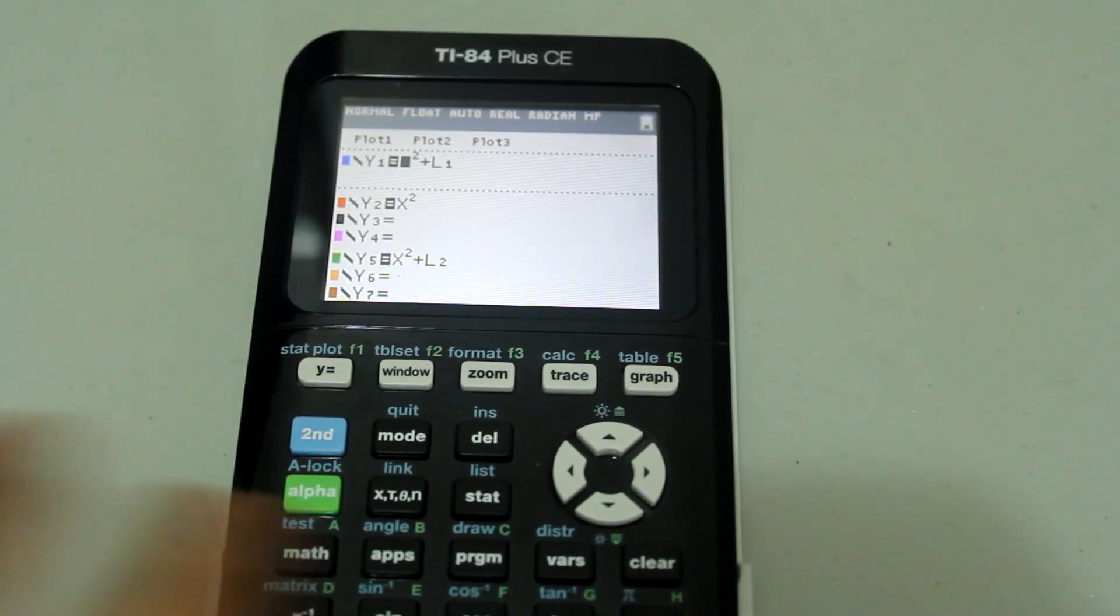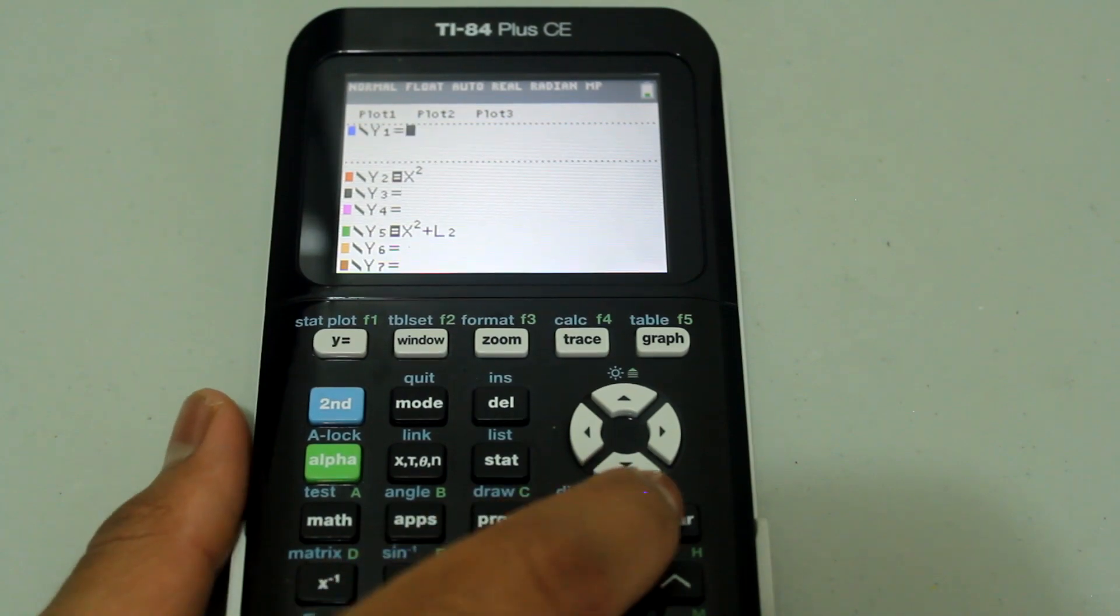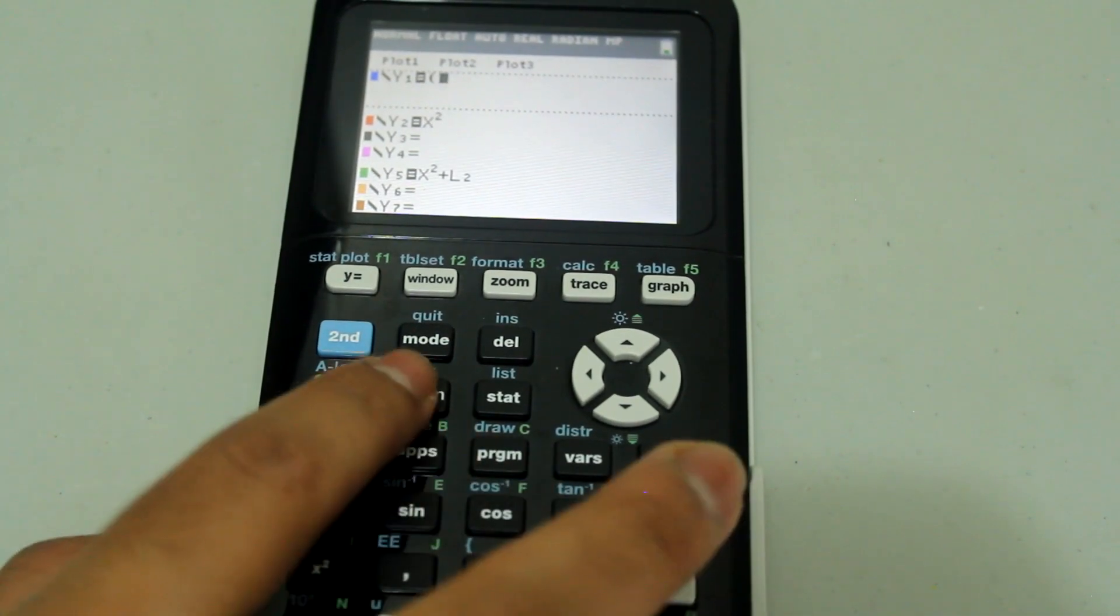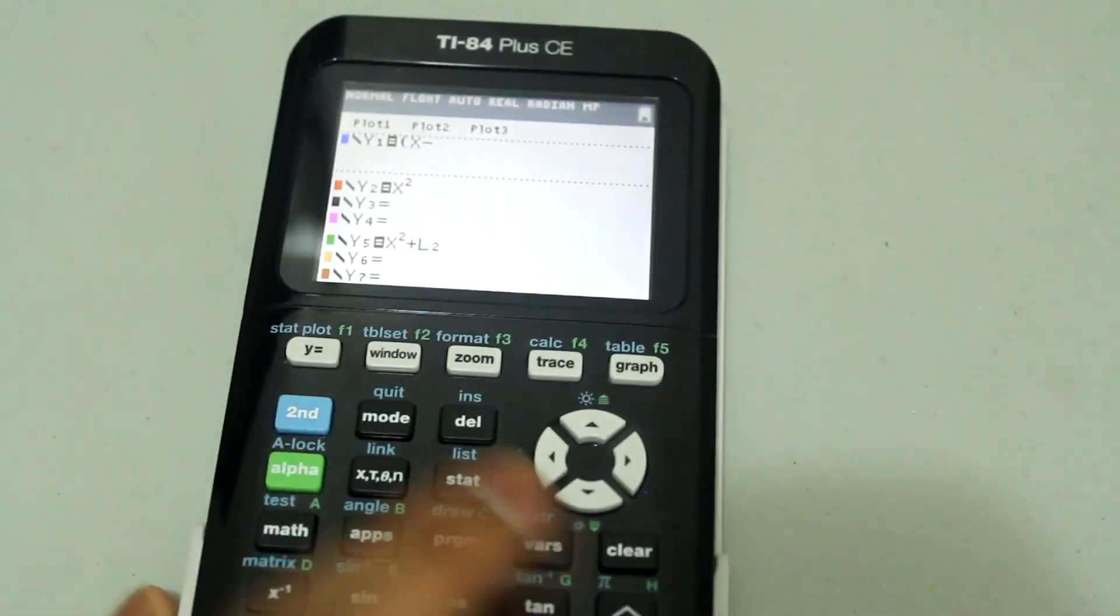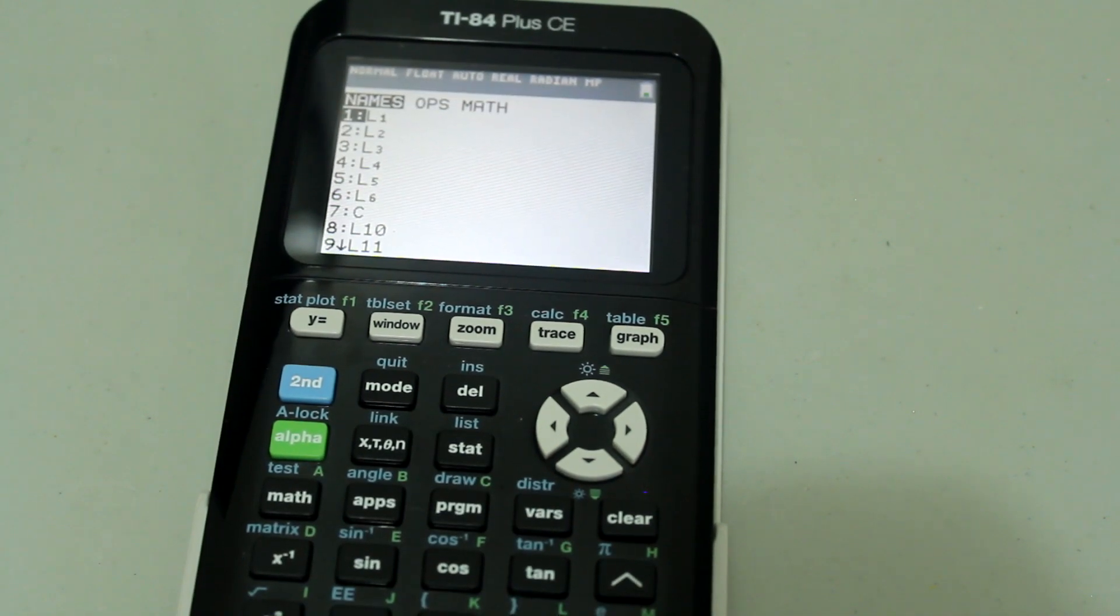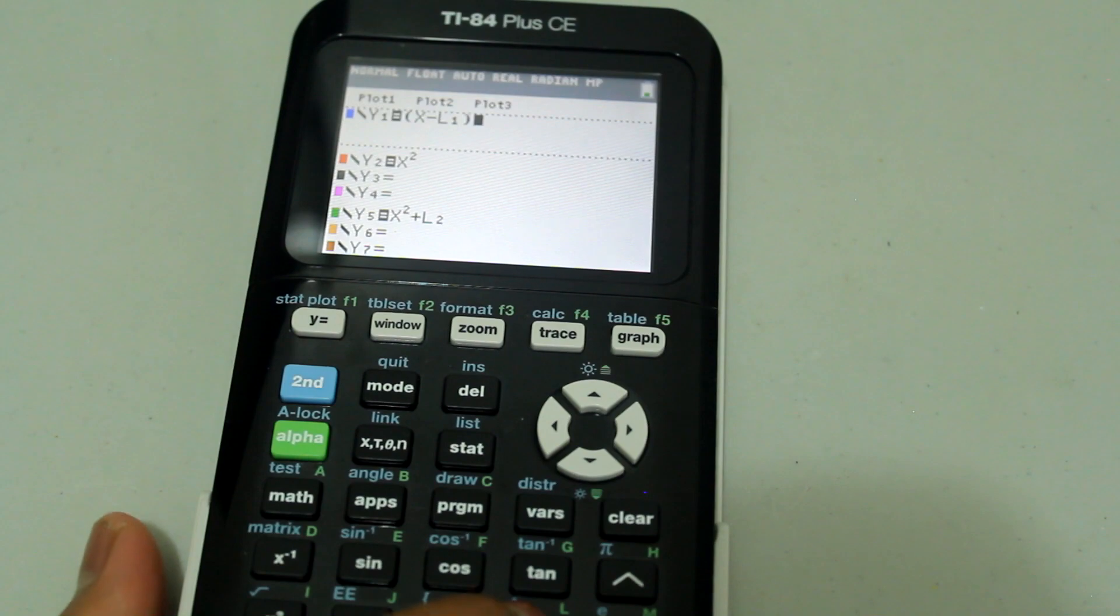If you wanted to shift your graphs horizontally, you would follow a similar procedure. So clear this, open a parenthesis, type in x minus and now second, stat L1, just select it by pressing enter. Close the parenthesis.